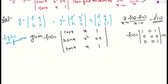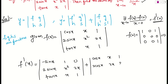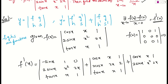So we apply row-wise differentiation to find f'(x). First determinant: differentiate row 1 — cos x becomes −sin x, x becomes 1, constant 1 becomes 0 — while rows 2 and 3 stay as is. Second determinant: row 1 as is, differentiate row 2 — sin x becomes cos x, x² becomes 2x, 2x becomes 2 — row 3 stays. Third determinant: rows 1 and 2 as is, differentiate row 3 — tan x becomes sec²x, x becomes 1, 1 becomes 0.